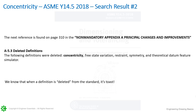Here is search result number two, found on page 310 in the 2018 standard, in the non-mandatory Appendix A, Principle Changes and Improvements. A-5.3, Deleted Definitions. The following definitions were deleted: concentricity, free state variation, restraint, symmetry, and theoretical datum feature simulator. When we see that the definition is deleted from the standard, we know at that point that it is toast — the standard will not support it anymore. It can't be supported when there's no definition. Rather than just taking it out without mention, they went ahead and did this so there was no argument about whether somehow we could get some definition out of the standard for this. This is point blank: it's deleted, it's gone.